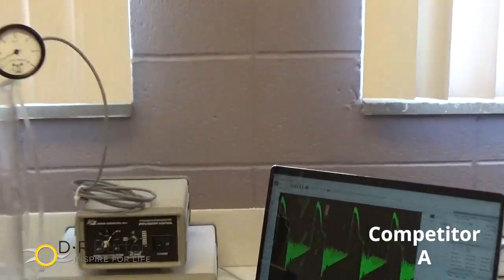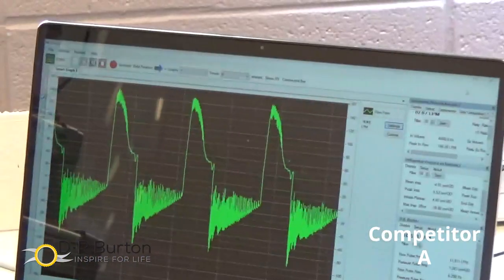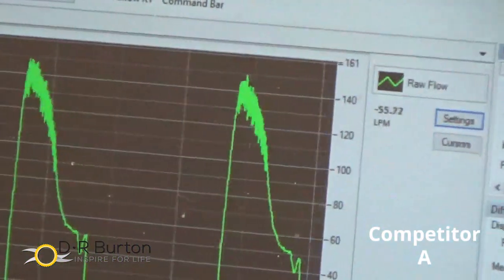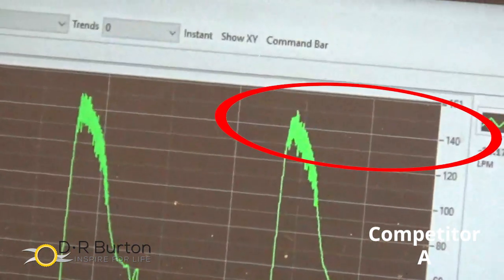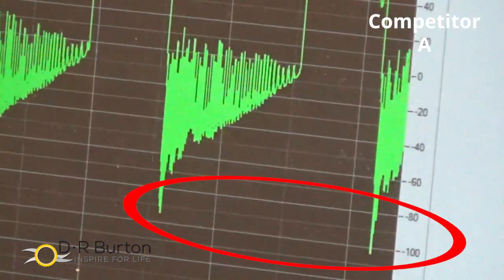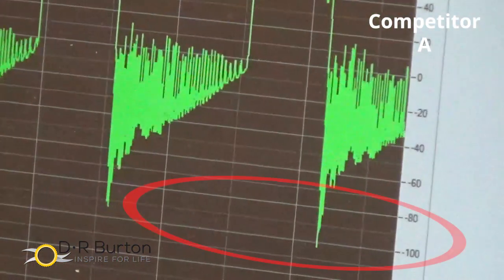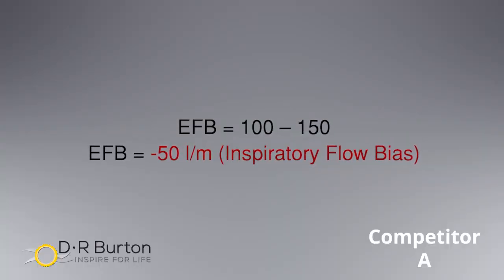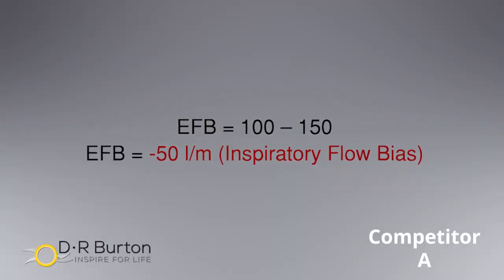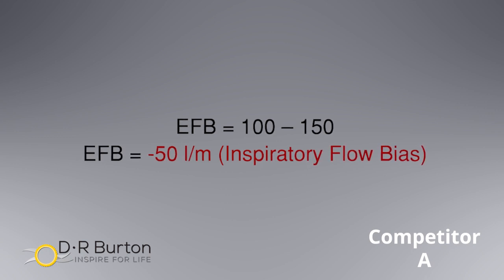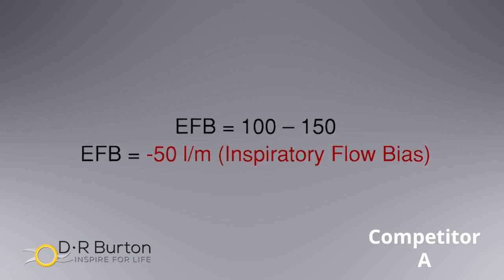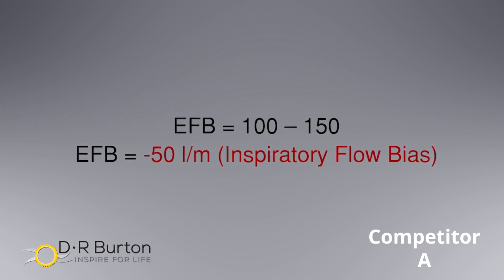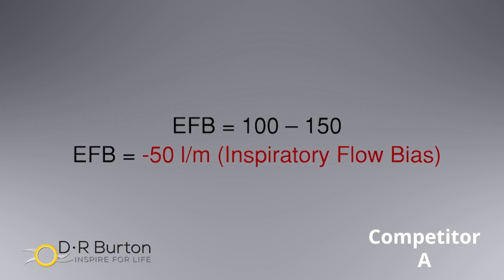Next, we compare the flow loops with a competitive OPEP device. As we zoom in on the flows, notice that the peak inspiratory flow is about 150 liters per minute, and the peak expiratory flow is 100 liters per minute. With a peak expiratory flow of 100 and peak inspiratory flow of 150 liters per minute, we have a negative expiratory flow bias — in this case, an inspiratory flow bias that would move secretions caudad, toward the periphery of the lung.